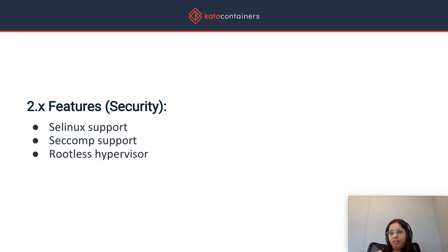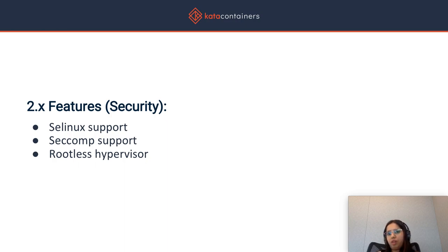In terms of security, we made several improvements. We worked with both the CRI-O and containerd communities to have SELinux support implemented end-to-end for Kata, which entailed adding a separate SELinux profile specific to Kata — more suitable for hypervisor-based runtimes. There is an excellent talk from Fabiano Fidentio on this at the OIF Summit in Berlin. In addition to SELinux, we also added support for SecComp and support for a rootless hypervisor. This feature allows the hypervisor itself to run with minimum privileges, even when the runtime is called with root privileges.